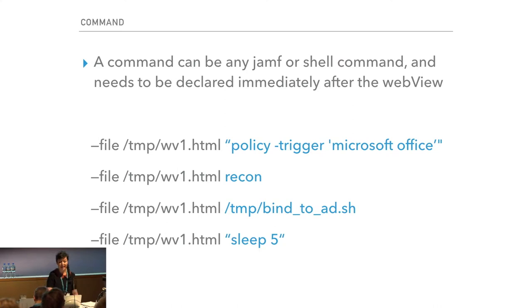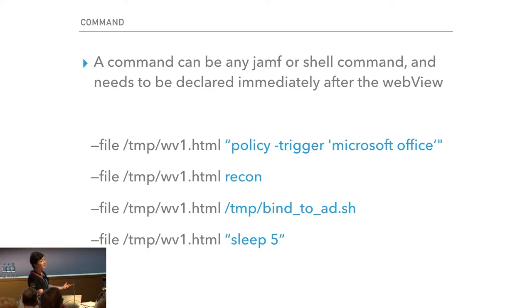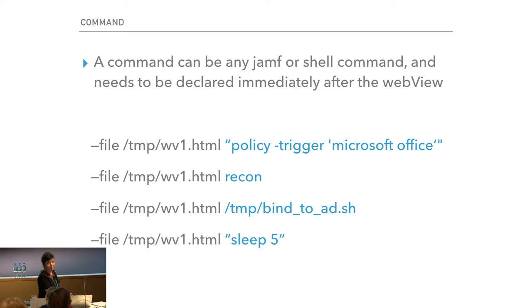A command can be any Jamf or shell command and is declared immediately following the web view. For example, you can specify a policy trigger like Microsoft Office — you don't need to state it's a Jamf command; Trigger detects the Jamf verb and fills in the gaps, as long as the Jamf binary is in the default location. Trigger also has the ability to run a script or another shell command.